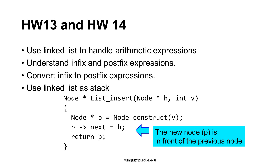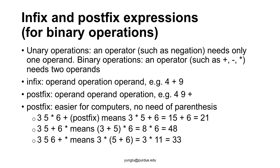What is an infix expression? What is a postfix expression? In these two assignments, we will focus on binary operations. We will not consider unary operations. Negation is an example of a unary operation — it takes only one operand. A binary operation takes two operands. For example, when we say 4 plus 9, 4 and 9 are operands, and the plus sign is the operation for addition.